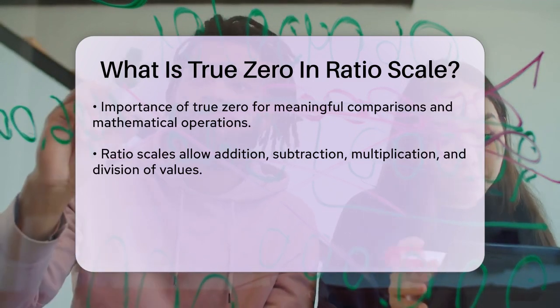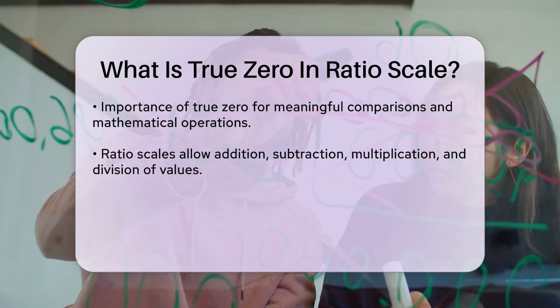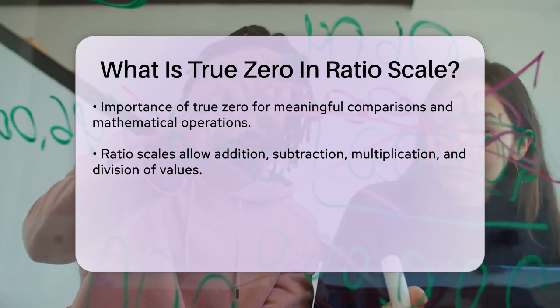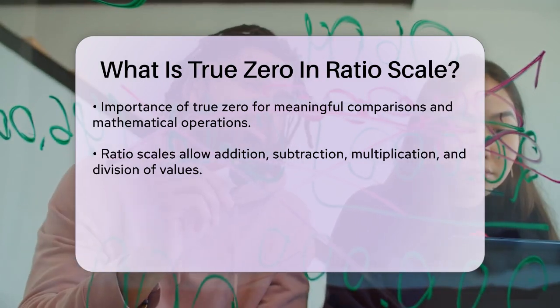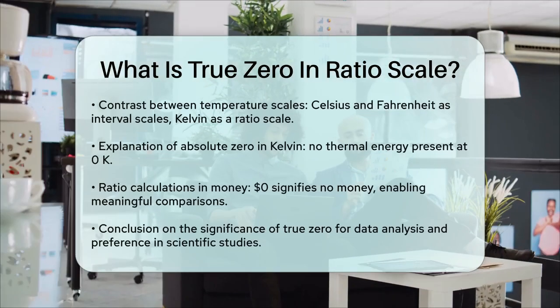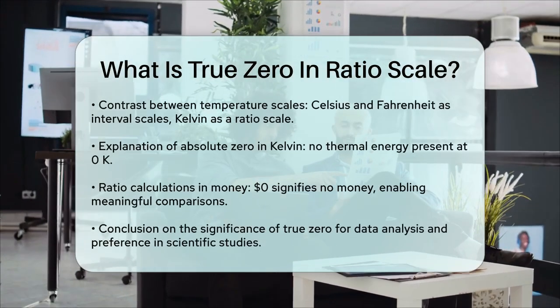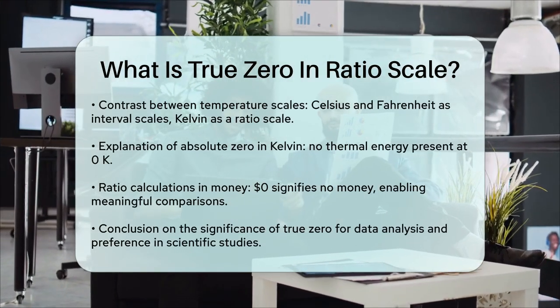Another example is money. If you have $0, it means you have no money at all. This true zero point makes it possible to calculate ratios, such as saying one person has twice as much money as another if one has $100 and the other has $50.